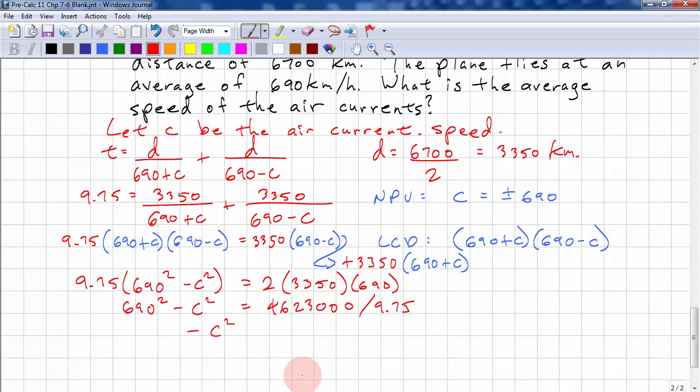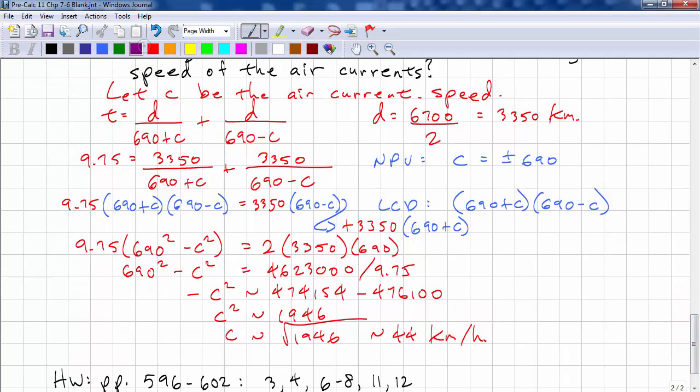So, minus C squared is approximately 474154 minus 476100. So, C squared is approximately 1946. So, C is approximately the square root of 1946. And that's roughly 44 kilometers per hour. And that's not the NPV.